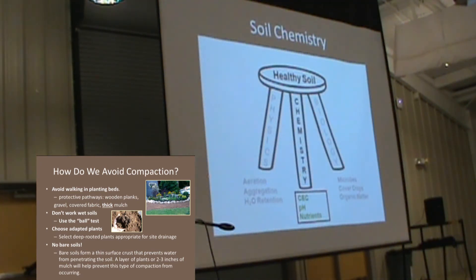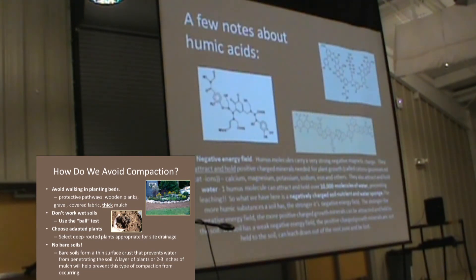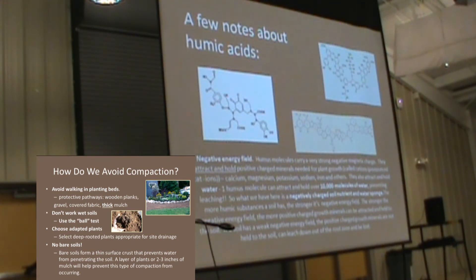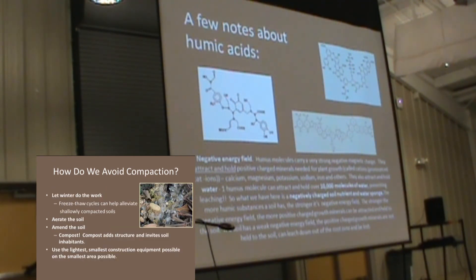Moving on to the chemistry. Humus is really neat because it is very negatively charged. Greater amounts of humus in your soil are going to attract a lot of the elemental nutrients that we need — those that are positively charged, like calcium, sulfur, and magnesium. There are also humic acids — different types that can be released from degraded plant material.